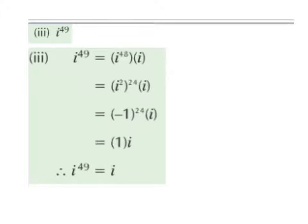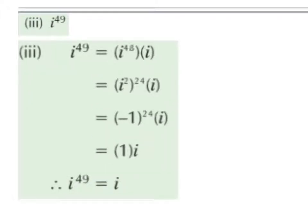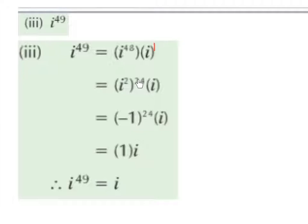Simplify i to the power of 49. i to the power of 49 can be broken down as i to the power of 48 times i, which is really i to the power of 1, because 48 plus 1 is 49.